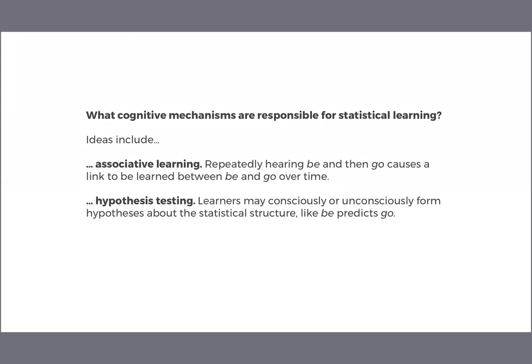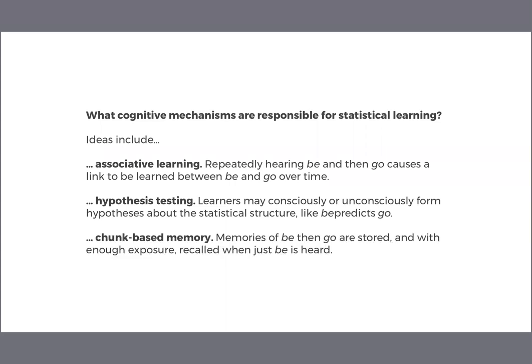A second idea is that we engage in a form of hypothesis testing — perhaps testing different theories about what kind of patterns could generate the stream of syllables we are hearing. Some people think this hypothesis testing is explicit and deliberate, while others think it could be implicit and automatic. A third idea is that we use a kind of memory: we have memories of lots of different combinations of syllables, and since 'be-go' occurs more often than non-word pairs, we have more memories of it and eventually learn to recognize it as a pattern.